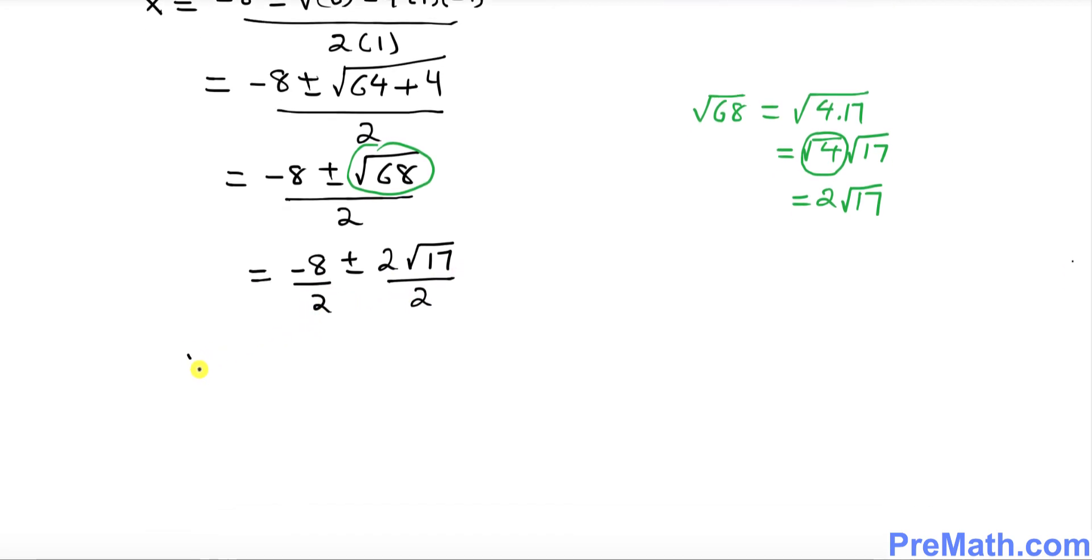Let's simplify and reduce. This could be written as -4 ± √17, where the 2s cancel out.